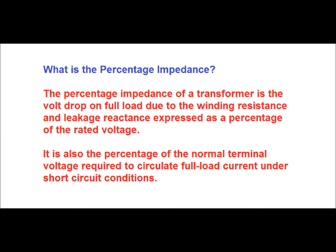For a power transformer, if the primary is short circuited, then you have to give that percentage of the secondary voltage to circulate the full load current in the primary side. Alternatively, if the secondary is short circuited, you have to give that percentage of primary voltage to circulate full load current in the secondary side.